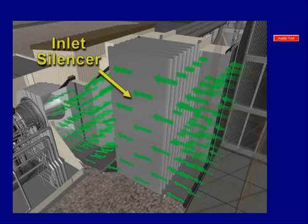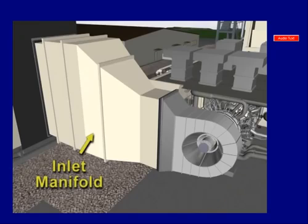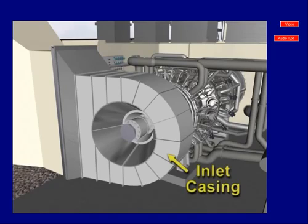Downstream of the mist eliminators, the air passes through the inlet silencer that is used to lessen the noise coming from the inlet air and the compressor inlet. The inlet manifold directs an efficient flow of air into the axial flow compressor inlet. The inlet casing provides a smooth transition flow of air into the axial compressor. Click on the video button to view an animation of the inlet air system.